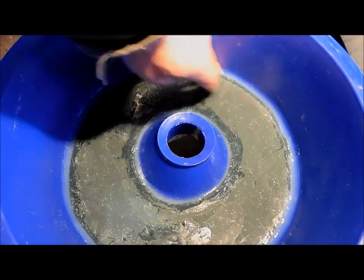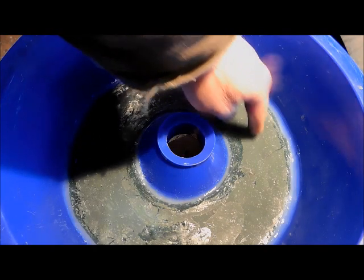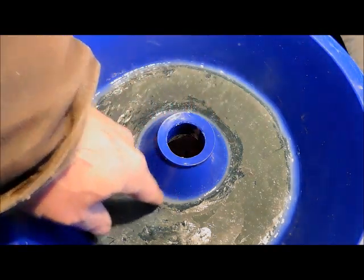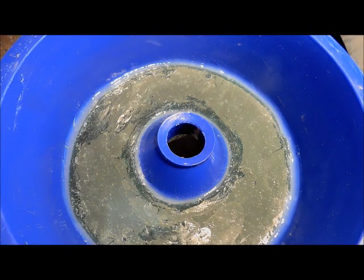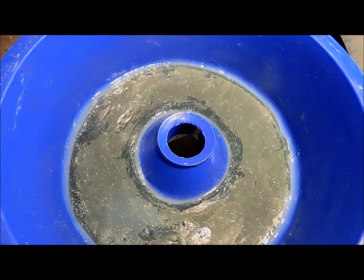I just made the mat, cut it out, and siliconed it in. I didn't silicone it on the bottom, just around the edges, just in case this is an absolute fail. I'm not spending days trying to get this silicone off my blue bowl.